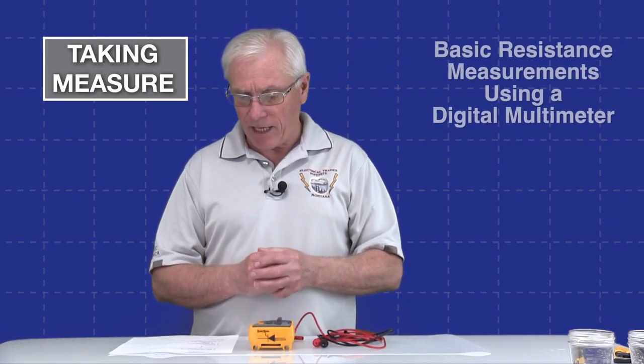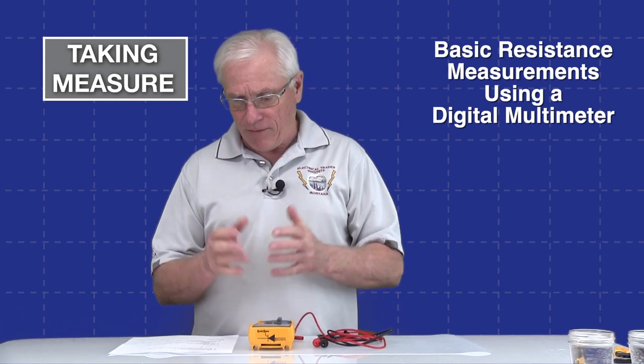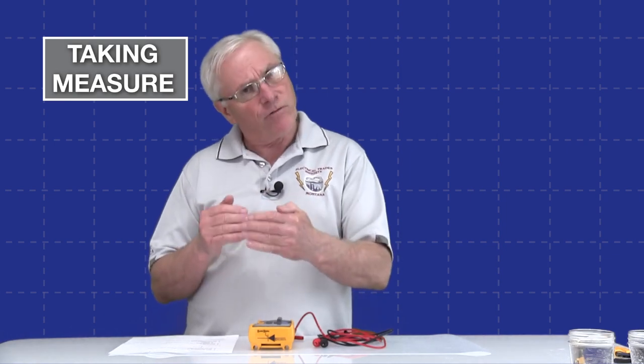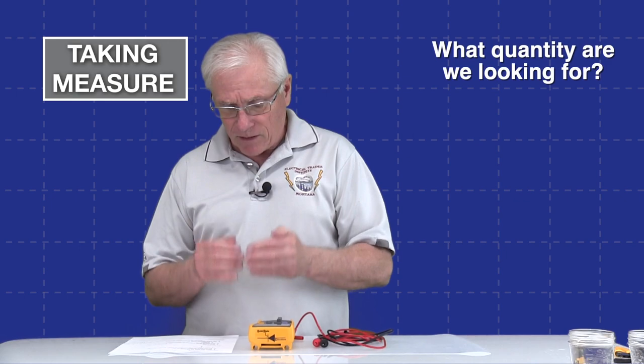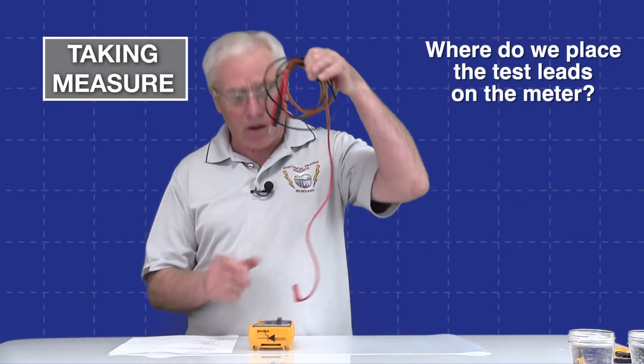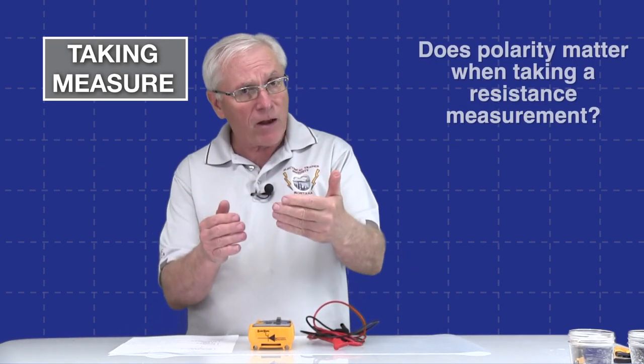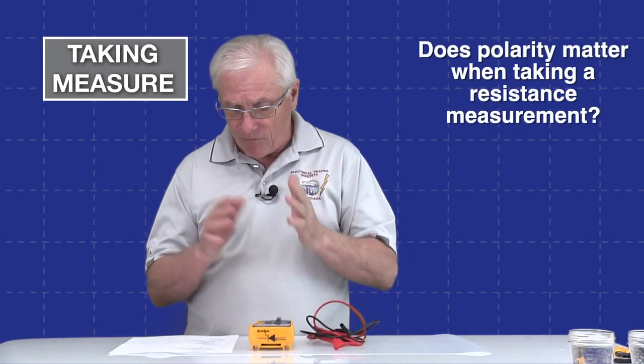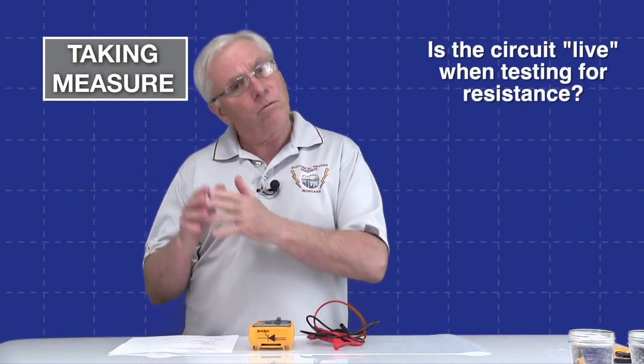We're going to take a few minutes and talk about taking resistance measurements with a digital multimeter. We really need to know what we're doing and how we are doing it as a basic question. But I also wrote down four other questions. The first one is, what quantity are we looking for? The second one is, what's the test lead placement on our digital multimeter? And then we also want to know, does polarity matter when we take this measurement? And finally, are we working with live circuits here? So let's talk about this for a moment first on these four questions.